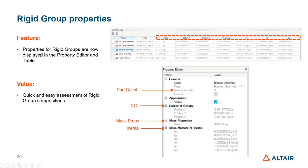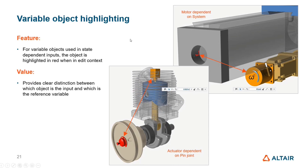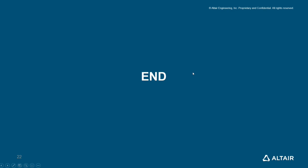We now provide rigid group properties for rigid groups — in addition to the existing table, additional properties are now displayed in the property editor when you click on a rigid group. We also have variable object highlighting for state-dependent inputs. When setting up a state-dependent input — for example, where a motor depends on the linear displacement of a system, or a force on the piston is a function of angular displacement of a joint — the independent object is now highlighted in red so you can clearly see which one has been chosen. That is the end of new features and enhancements for Inspire Motion 2022.1.